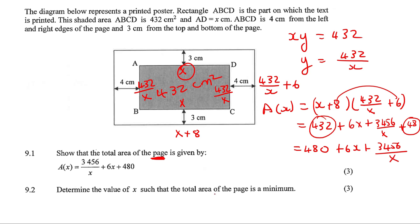Now it says: determine the value of X so that the total area is a minimum. Whether they say minimum or maximum makes no difference — you're going to do what we normally do. How do we find the minimum or maximum of anything? I want you to know this off by heart: you take the first derivative and make it equal to zero. That's it. What do we want to find the minimum of? The area. So we need a formula for area — and we already have one.